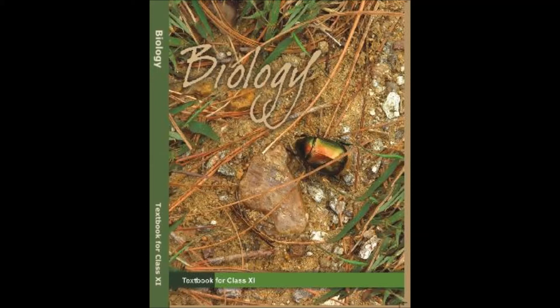The question is how to place an organism in various categories. The basic requirement is the knowledge of characters of an individual or group of organisms. This helps in identifying similarities and dissimilarities among individuals of the same kind as well as of other kinds. Taxonomic studies consider a group of individual organisms with fundamental similarities as a species. One should be able to distinguish one species from another closely related species based on distinct morphological differences.